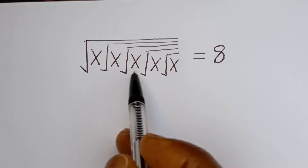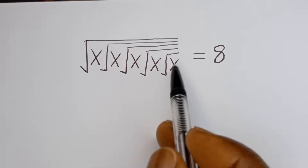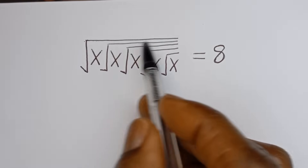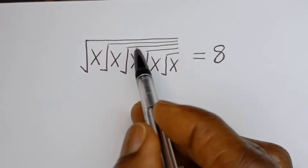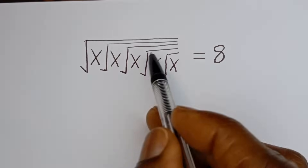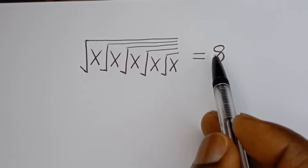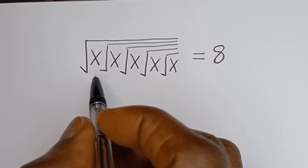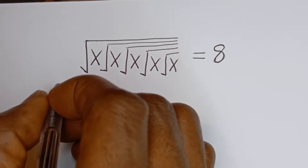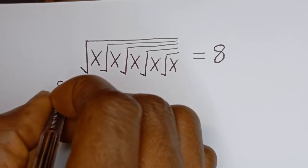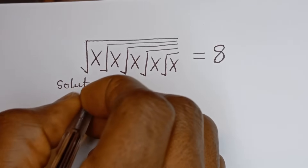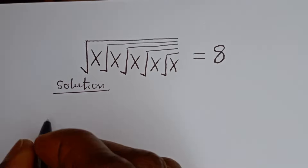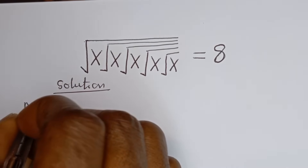Hello. How to solve for S in this equation: square root of S, square root of S, square root of S, square root of S, and square root of S is equal to H. We're going to make use of two methods here. Let's consider the first method, called Method 1.